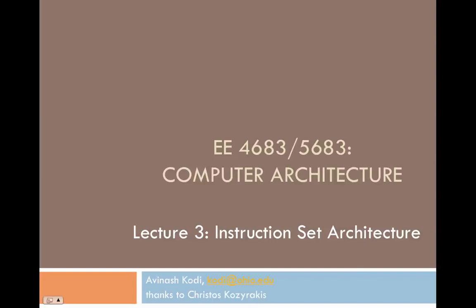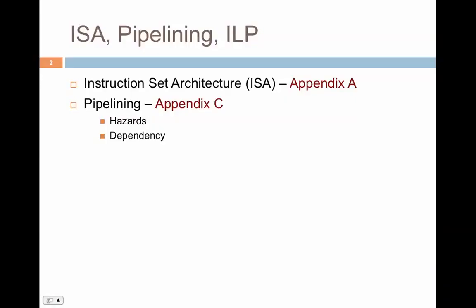In lecture 3, we are going to analyze the instruction set architecture. This is covered in the textbook under Appendix A, which deals primarily with the instruction set. We will also do some basic review of pipelining, covered in Appendix C, which talks about hazard detection and dependency analysis. We will first start talking about the instruction set and then continue into pipelining.